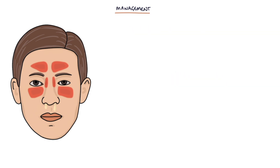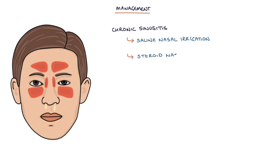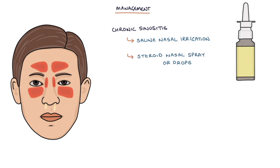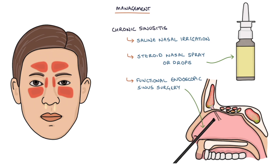Options for treating chronic sinusitis are saline nasal irrigation to wash out the sinuses, steroid nasal sprays or drops — for example mometasone or fluticasone — and functional endoscopic sinus surgery, which can be shortened to FESS, which we'll talk about in more detail shortly.